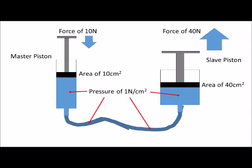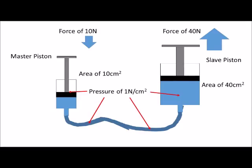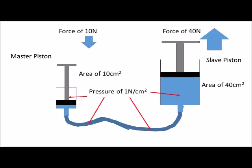You will notice that as the plunger of the master piston goes down, the plunger of the slave piston goes up. There is a greater force in the slave piston, but the distance of movement is less.